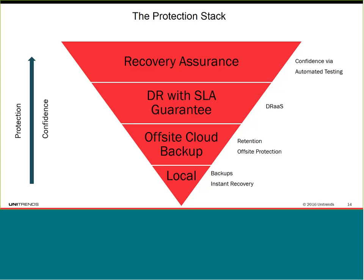Building this protection stack from basic to maximum means increasing levels of protection and putting technology in place to increase confidence that systems will stay up and running no matter what. At the bottom is basic local protection — you need backup in place for all your applications. With a modern backup system, you have basic local protection such as instant recovery technologies that allow you to do some basic DR locally in the event of hardware failure or a ransomware attack.